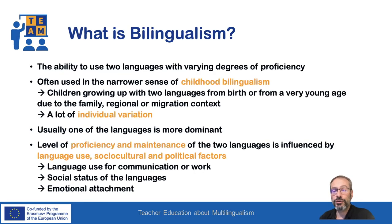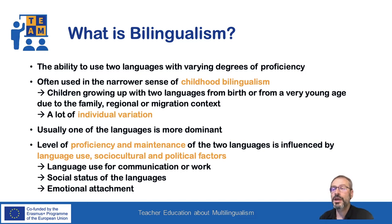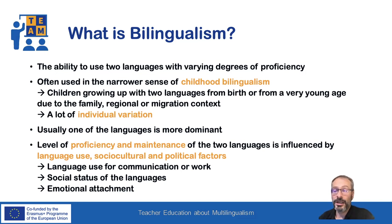Bilingualism generally describes the ability to use two languages with varying degrees of proficiency. Often the term bilingualism is used in the more narrow sense of childhood bilingualism, referring to children who grow up with two languages from birth or from a younger age due to family circumstances or a regional or migration context.